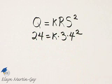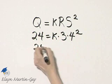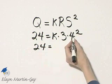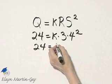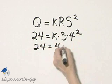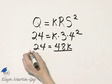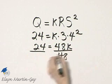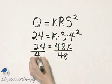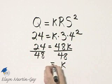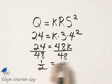let's stop right there and solve for K. So 24 is equal to 4 squared, which is 16. 16 times 3 is 48. How do we solve for K now? We divide both sides by the coefficient of K, which is 48. And notice we have that K is 1 half.